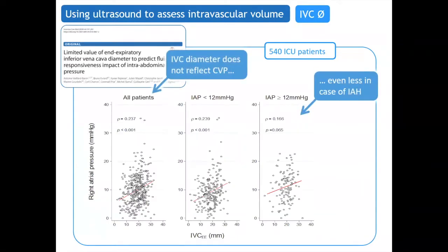Let's start with the diameter of the inferior vena cava, which we usually use as an estimation of central venous pressure. One important message: the IVC diameter is a very poor marker of cardiac preload. It is a very poor marker of right cardiac preload, and it's a poor estimation of the central venous pressure. This has been suspected by many studies, and now it is clearly demonstrated in a study published in Intensive Care Medicine in 2018.